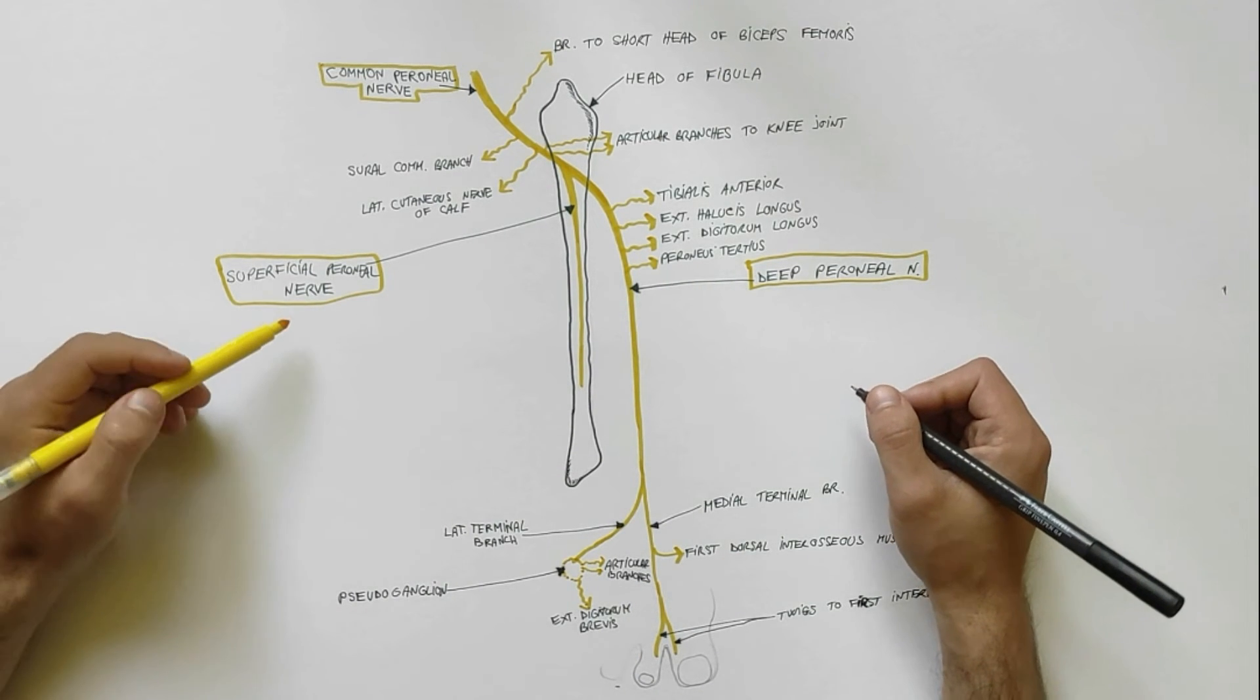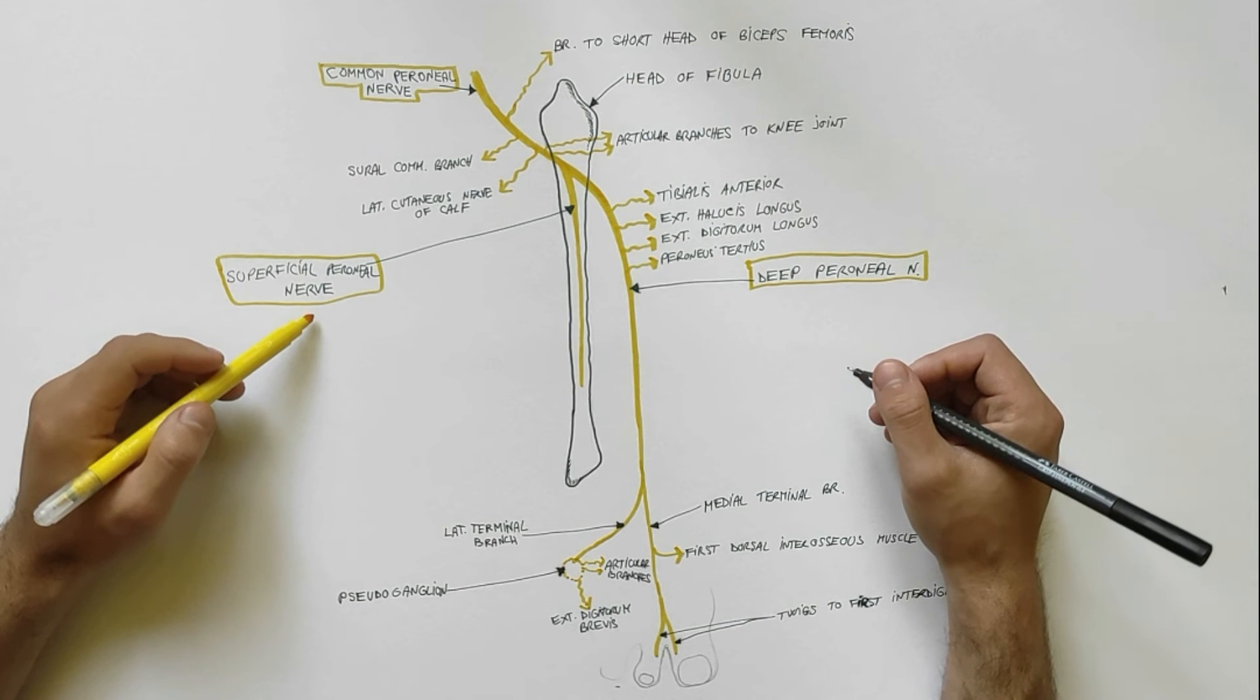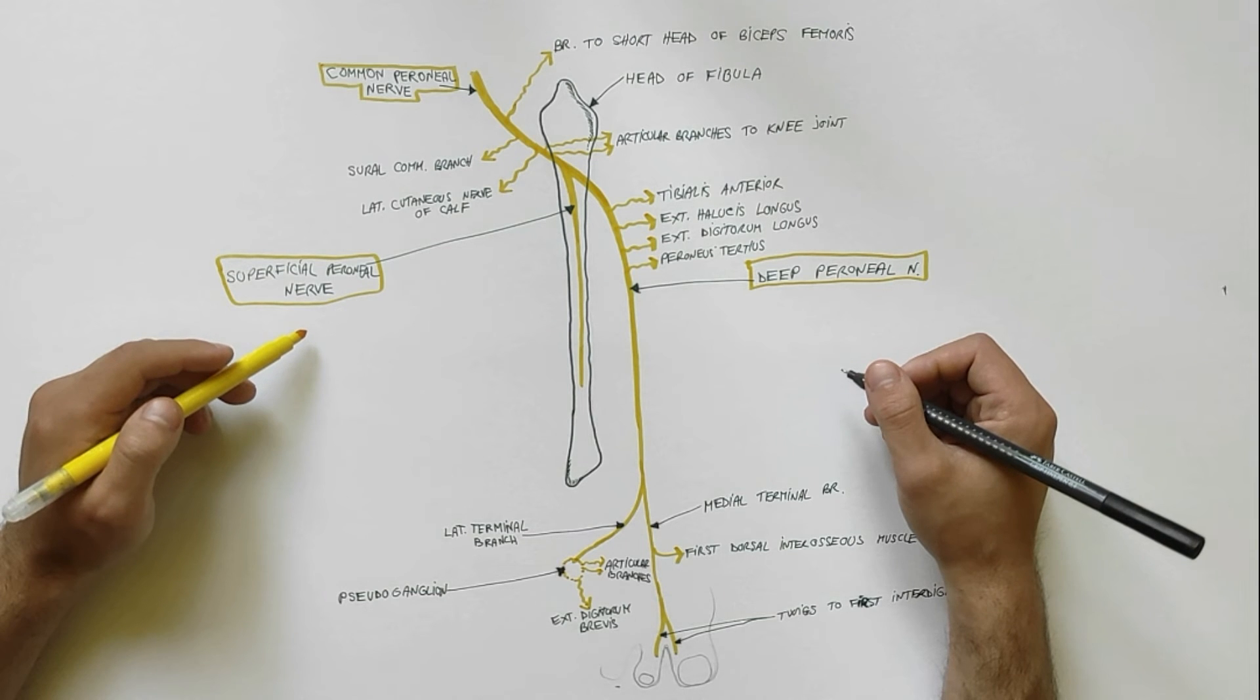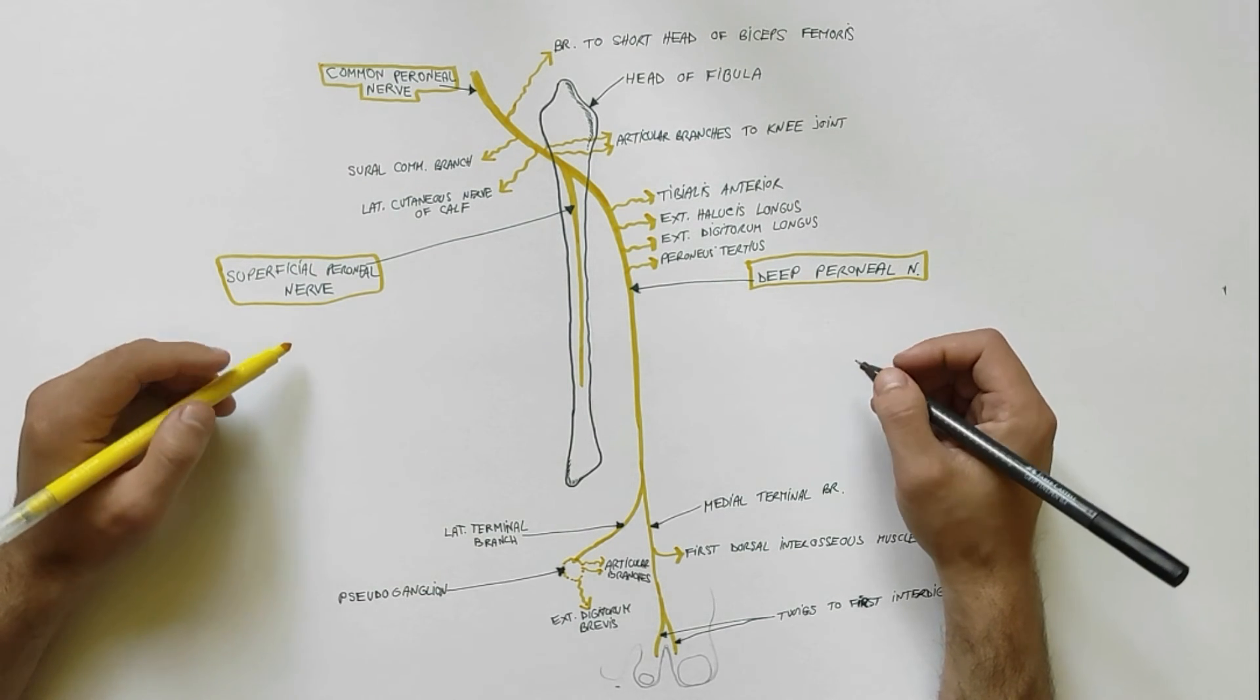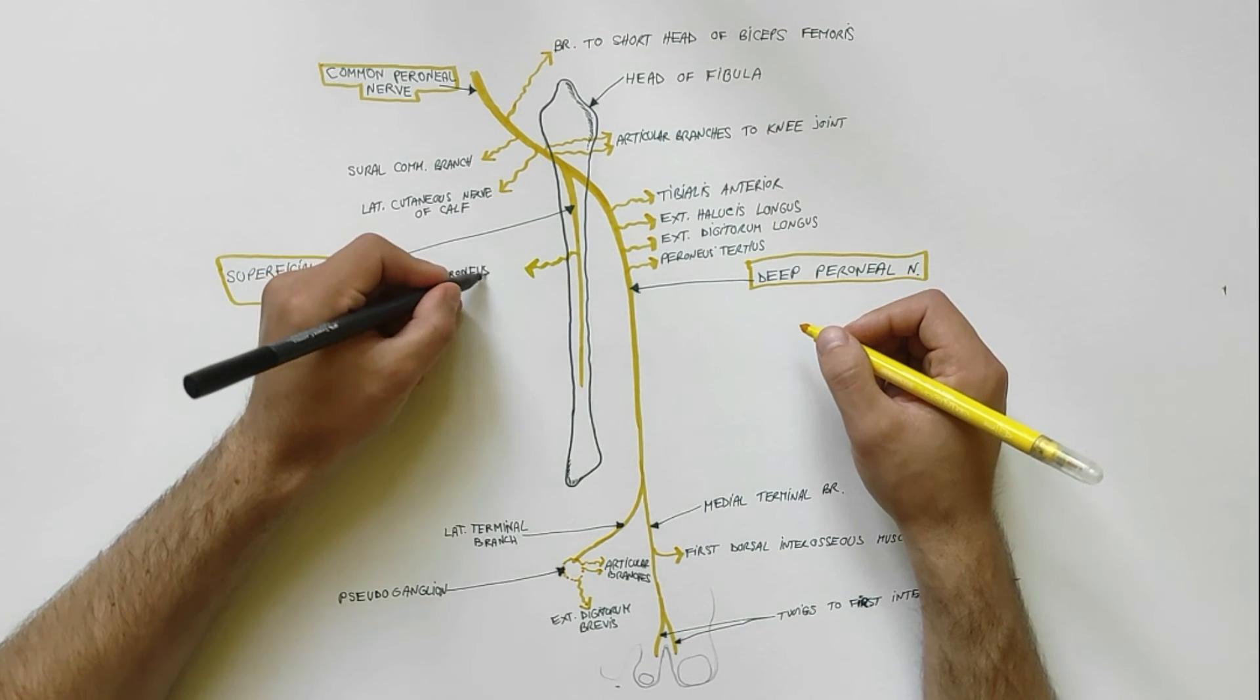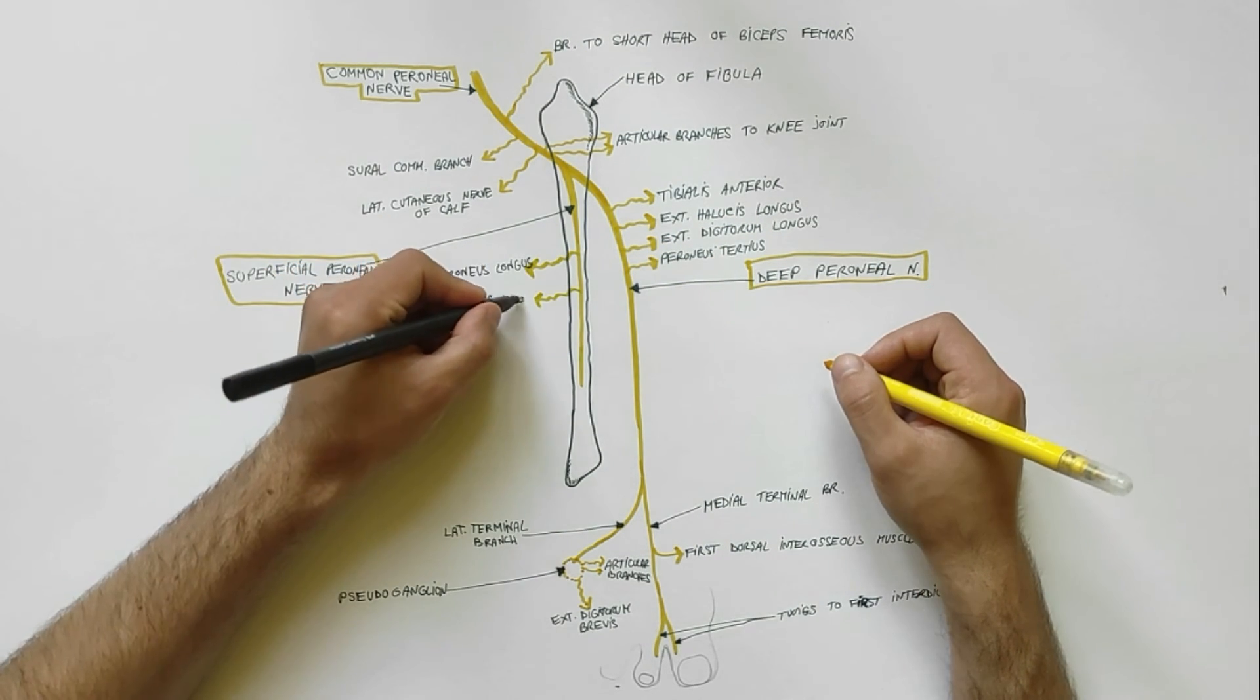Superficial peroneal nerve is the main nerve of the lateral compartment of the leg. It begins at the lateral side of the neck of fibula and runs through the peroneal muscles. It gives two motor branches for peroneus longus and peroneus brevis.